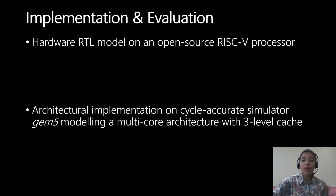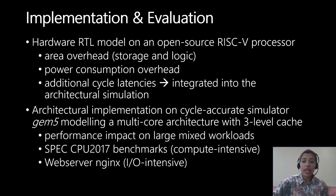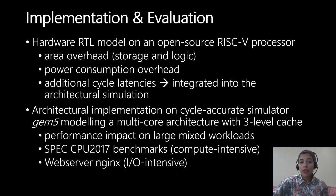We evaluated chunked cache for hardware overhead on an RTL implementation model on a RISC-V processor. The hardware model is also used to estimate cycle latencies for the modified cache management and access operations. We integrate these latencies into an architectural cycle-accurate implementation of chunked cache on GEM5, running large mixed workloads from the SPEC CPU 2017 benchmarks. Our experiments show chunked cache outperforms way-based partitioning and does not adversely impact OS performance.